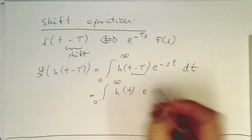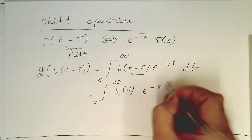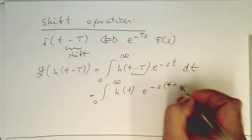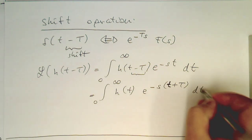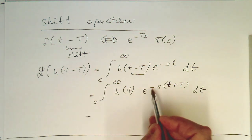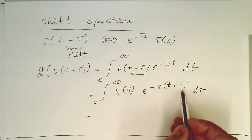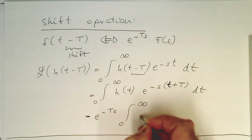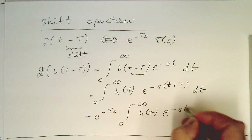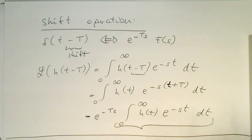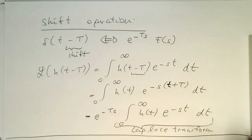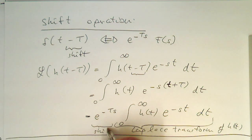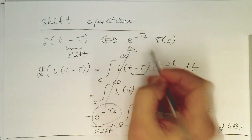So we write h of t, and then e to minus s times t plus T. We're getting a constant factor here, which is just e to minus s·T, which we can just move out. Then the integral runs from h of t times e to the minus s·t dt — and this is obviously just the normal Laplace transform of h of t. Therefore, we are getting this shift operator. So we've proven that.